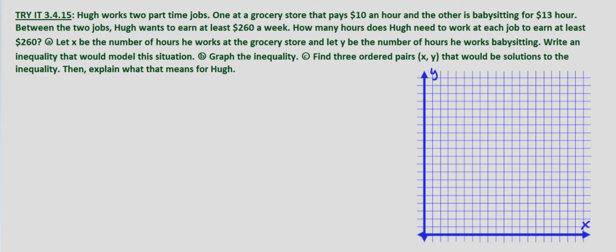Between the two jobs, he wants to earn at least $260 a week. How many hours does he need to work at each job to earn at least $260? For part A, we are told to let X be the number of hours he works at the grocery store and Y be the number of hours he works babysitting, and to write an inequality that would model this situation.